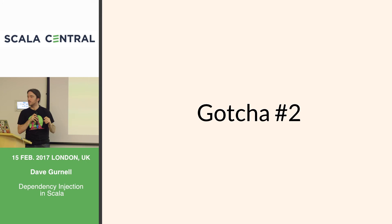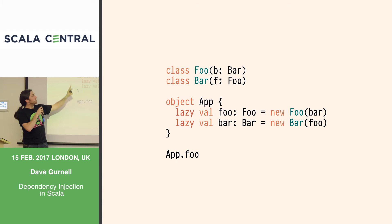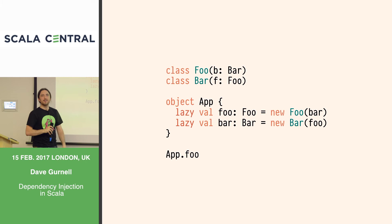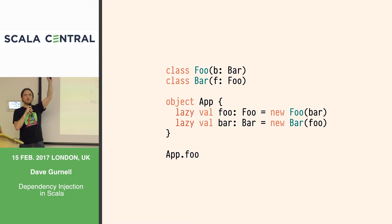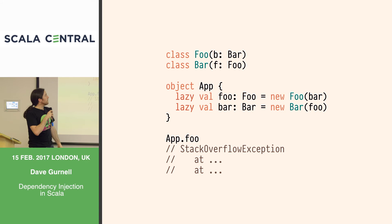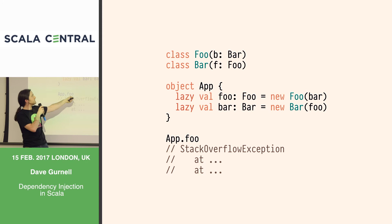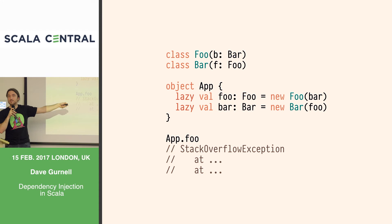Gotcha two: I've got two modules — Foo and Bar. Foo depends on Bar and Bar depends on Foo — a circular dependency. They're both lazy vals. If I try to access Foo, what happens? Stack overflow. We go: I need Foo, so I'll force this lazy val — I'll build Foo. That calls the constructor, which needs Bar, so I force Bar, which calls its constructor, which needs Foo — which isn't done constructing yet — so we call that constructor again, and we jump back and forth until we stack overflow.